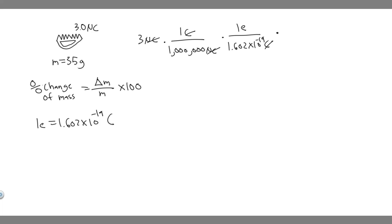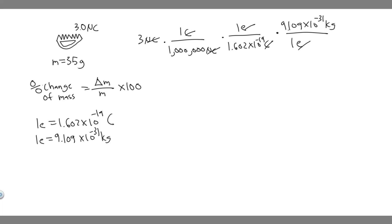Now we convert from electrons into kilograms. We know 1 electron is equal to 9.109 times 10 to the minus 31 kilograms. Multiplying by this conversion factor, the electrons cancel, and we've converted from microcoulombs into kilograms. When you carry out this calculation, you get 1.705 times 10 to the minus 17 kilograms.